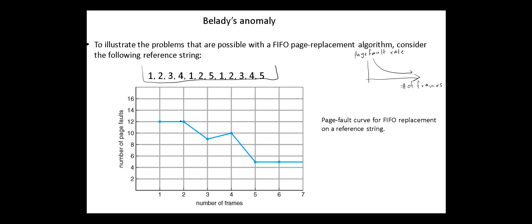If the number of frames is 2, then we have 12 page faults. If the number is 3, we have 9. But if the number of frames allocated to the process is 4, then the number of page faults increases to 10. In this case the maximum number of page faults is 12. And if the number of frames is 5, then we have 5 page faults. But in between, Belady's anomaly occurs — increasing the number of frames in some cases does not decrease the page fault rate.